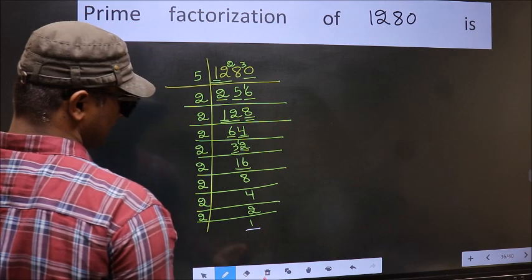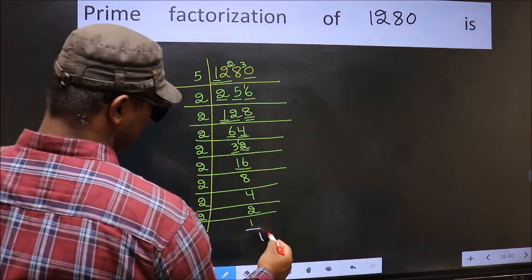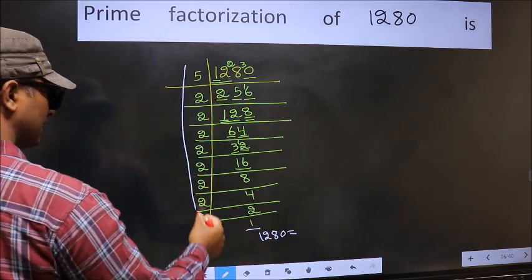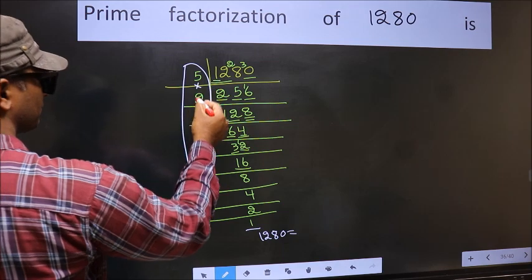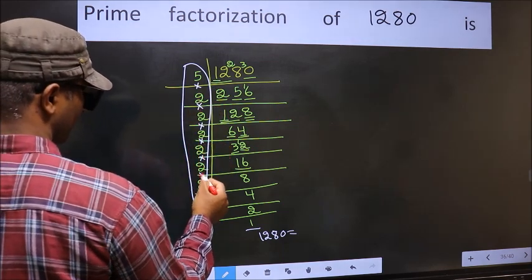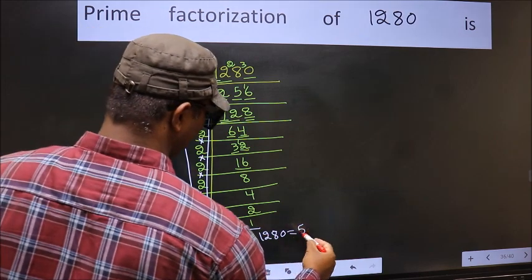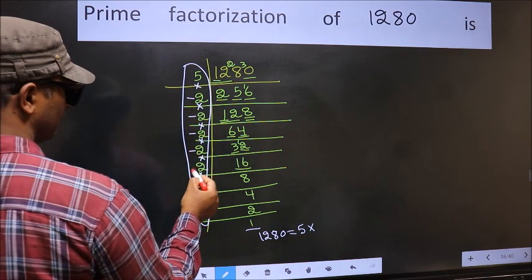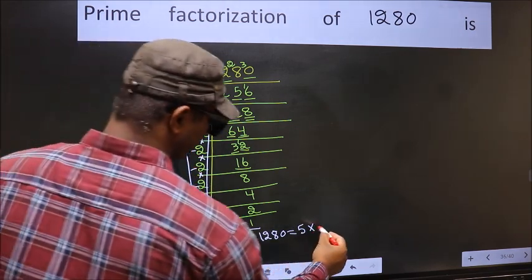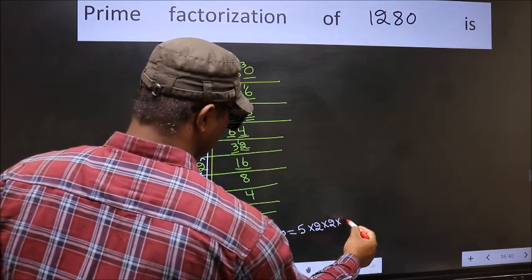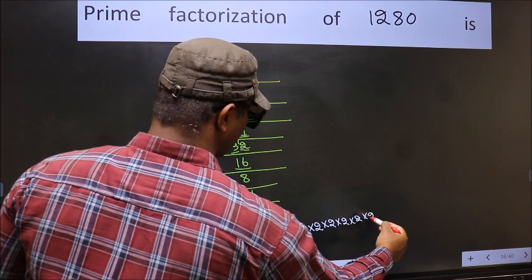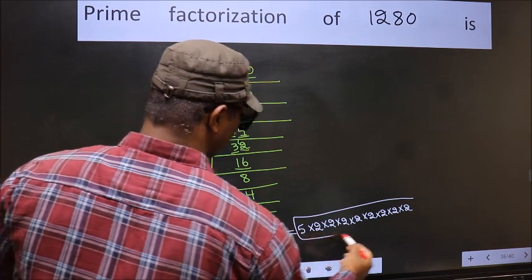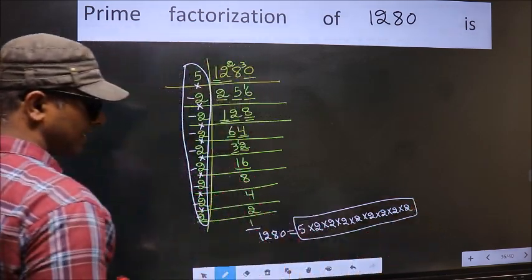So we got 1 here. So the prime factorization of 1280 is the product of these numbers: that is 5 × 2 × 2 × 2 × 2 × 2 × 2 × 2 × 2 — we got 2 eight times. This is the prime factorization of 1280.